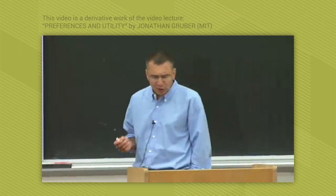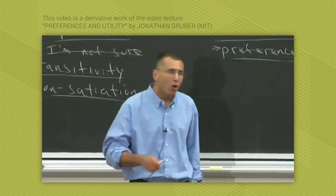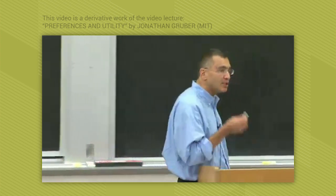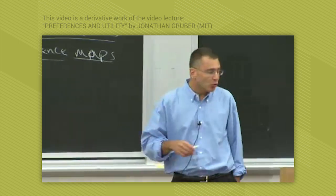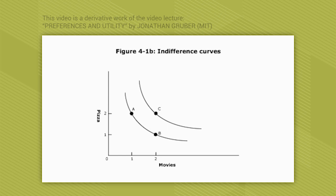An indifference curve is the curve showing all combinations of consumption along which an individual is indifferent. I'll say that again—very important concept. An indifference curve is a curve showing all combinations of consumption along which an individual is indifferent. I said you were indifferent between A and B, so you have an indifference curve that runs between A and B. That means all combinations along this curve you're indifferent about. You're equally happy getting two pizzas and one movie, or one pizza and two movies. But point C, which is two pizzas and two movies, is on a different indifference curve. You're not indifferent between point C and points A and B.